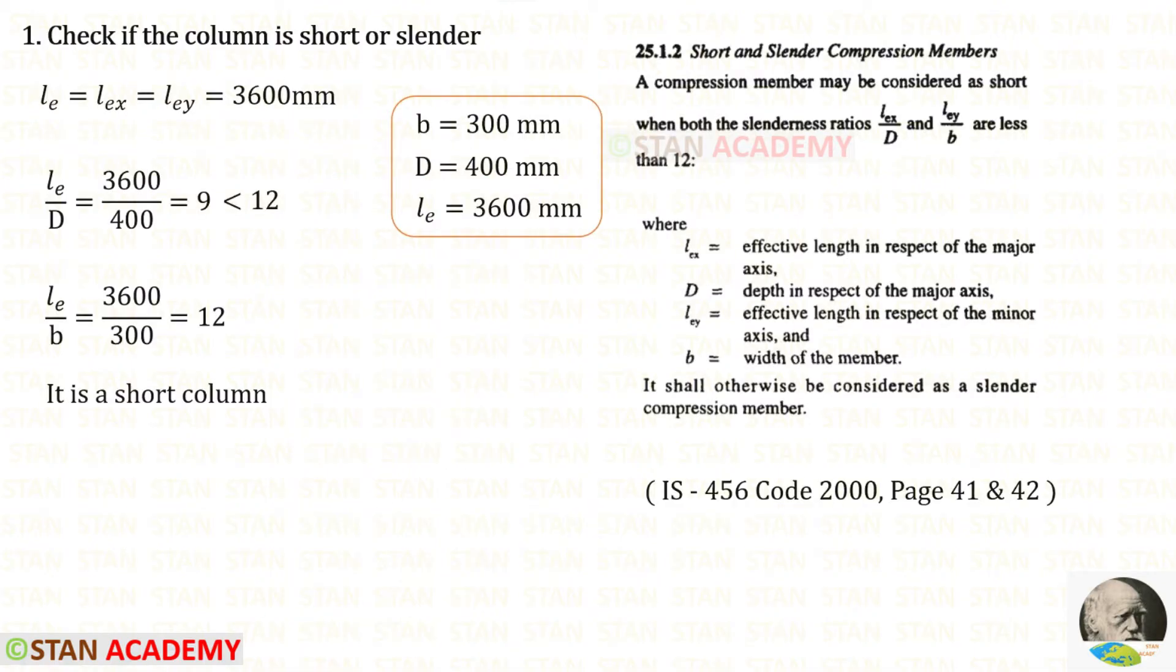Now let us check if the column is short or slender. For Le upon D, we will get 9 which is less than 12. For Le upon B, we will get exactly 12. Since the slenderness ratio is exactly 12, we can consider it is a short column. If it is more than 12, we should consider this as a slender column.